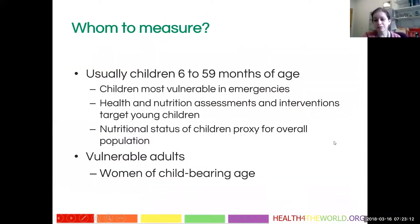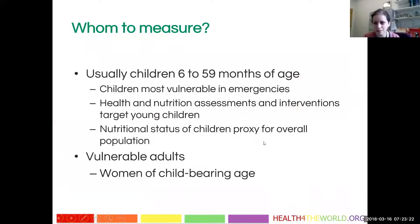From a public health perspective, we usually measure children 6 to 59 months of age — these are the most vulnerable children. The first six months they tend to be breastfeeding, and it's before complementary food is really needed. So these are where interventions have typically targeted.